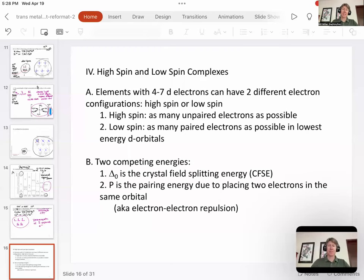All right, let's talk about the next level of complexity, which are called high spin and low spin complexes of transition metal complexes.